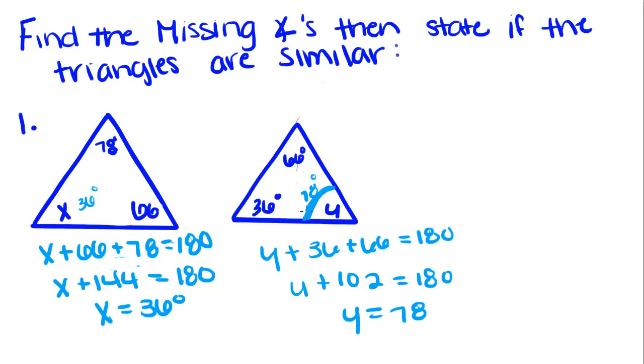So we know that Y equals 78, so this angle is congruent with this angle. We know X is equal to 36, and this angle over here is also equal to 36. So those two are congruent. So therefore, the triangles are similar by angle-angle.